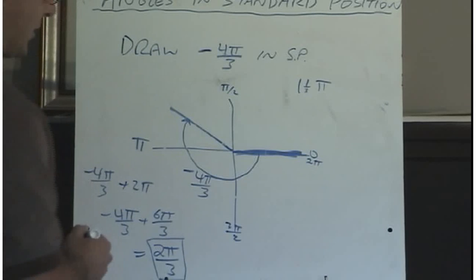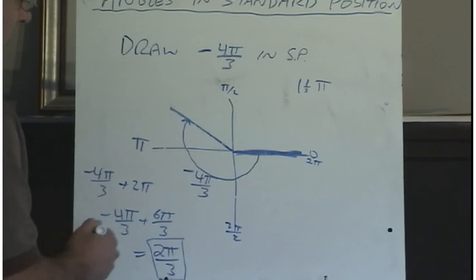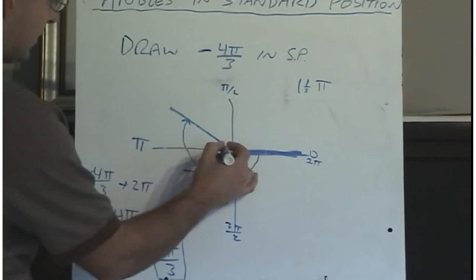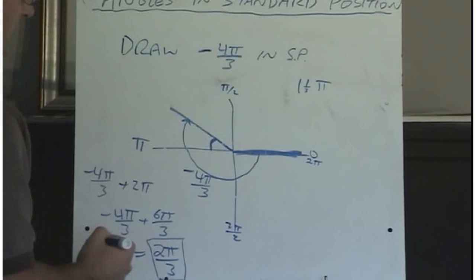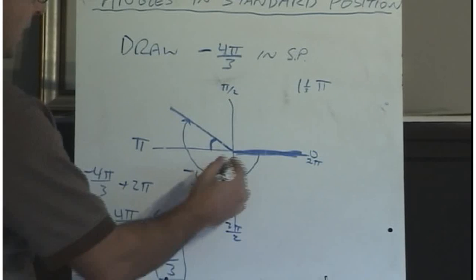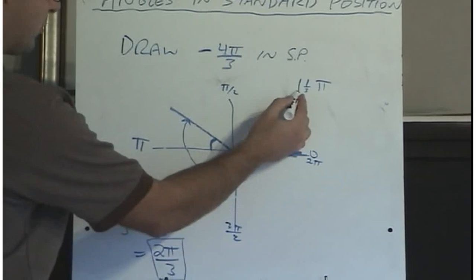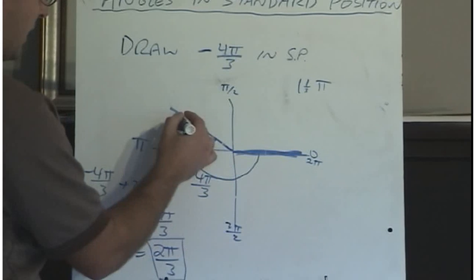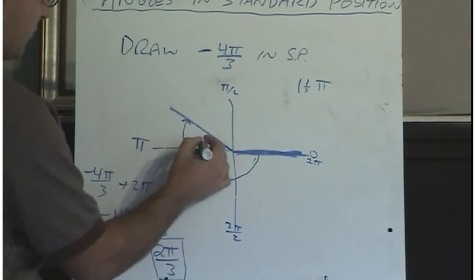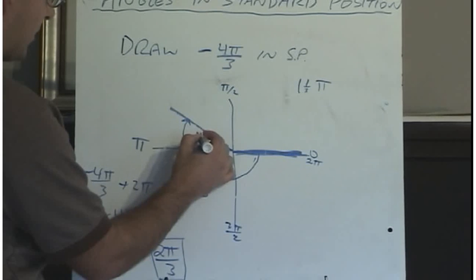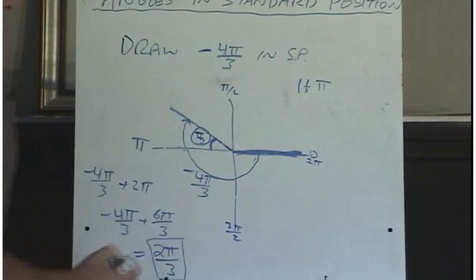If asked to determine the reference angle, it's the angle between the terminal arm and the x-axis — this one right here. We said the angle was the same as 1 and 1/3 pi. Since this portion is 1 pi, and we went 1/3 of the next pi, the reference angle would be pi over 3.